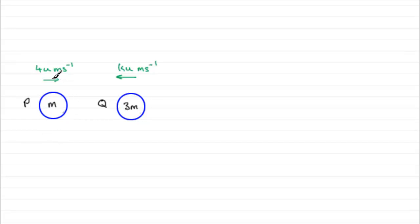So speeds are halved and the direction of motion is reversed. So if we look at the speed 4u for P, that's halved. Its direction of motion is reversed. So that's going to be going to the left now at 2u meters per second.